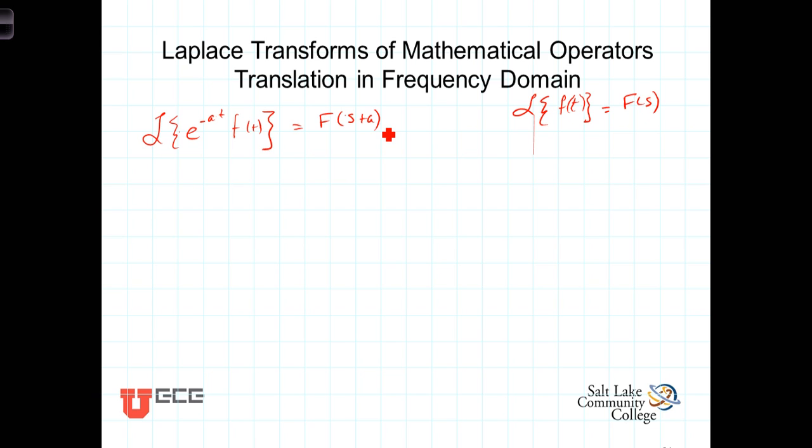Simply from the definition of Laplace transform, we can write then the integral from 0 minus to infinity of f of t times e to the minus a t, just rearranging the order there so that the exponential terms are together. So this is the thing we're wanting to Laplace transform, times e to the minus s t dt.